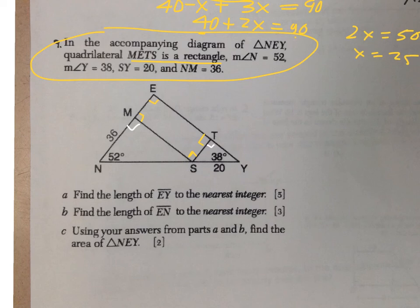So let's begin with figuring out EY to the nearest integer. Alright. Well, to figure out what EY is, I'm going to have to figure out what ET is and I'm also going to have to figure out what TY is and add them together.